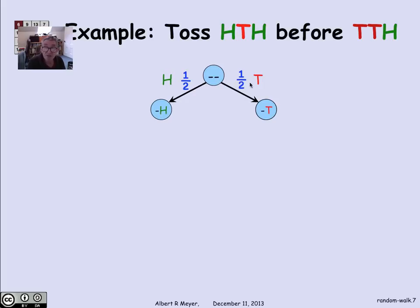in which case I'm in the state in which there's been a T and nothing previous. But I can already say something about the probability of tossing HTH before TTH, namely the probability of winning. Probability of winning is, of course, the probability of winning given that I start at the start state with no prior flips.